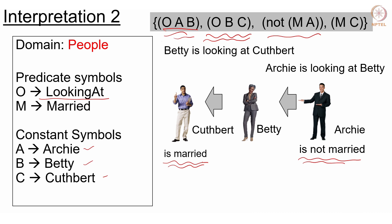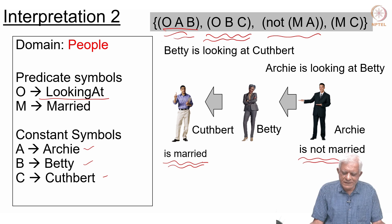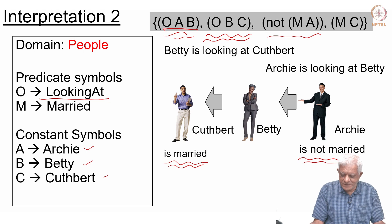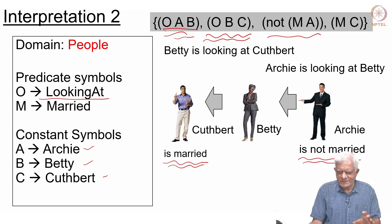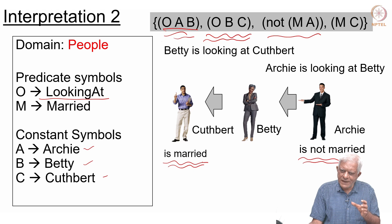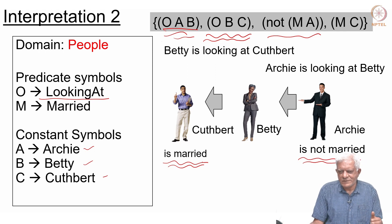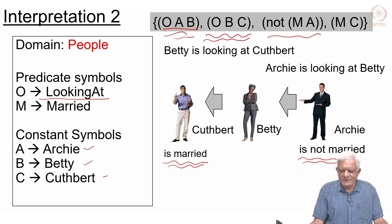This particular knowledge base is interesting — I read this puzzle on the Guardian website or somewhere. Given that Betty is looking at Catbert, Archie is looking at Betty, Catbert is married, and Archie is not married — is it true that an unmarried person is looking at a married person? Think about this question. We will come back to it later, after doing some logical reasoning with first order logic in the next video. Thank you very much.